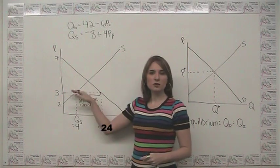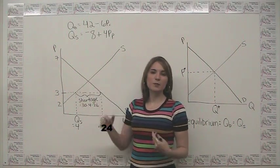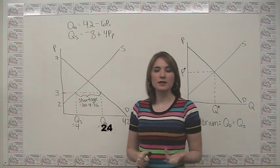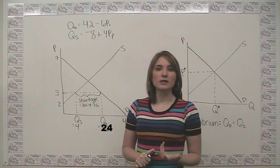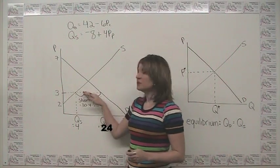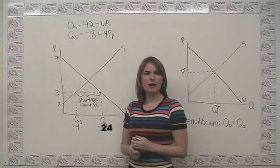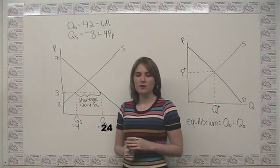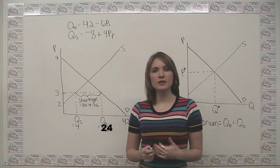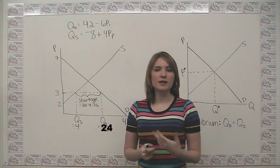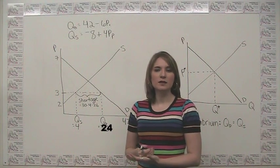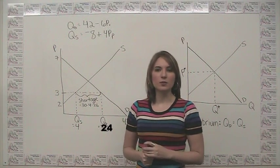So whenever there's a shortage, the price is actually going to get bid up either informally, like I just described, or formally, meaning the producers are going to see this and say, oh wow, we didn't produce enough, we could actually command a higher price for our item. And commanding a higher price for that item, well then if we can do that we're going to want to produce more.